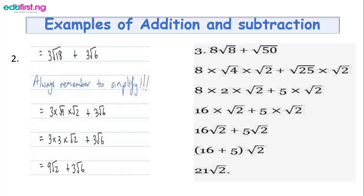The next example is 8 root 8 plus root 50. Root 8 breaks down as root 4 times root 2, and root 50 breaks down as root 25 times root 2. Root 4 is 2 and root 25 is 5. So 8 times 2 gives 16 root 2, and we have 5 root 2. Since root 2 and root 2 are now the same, we add: 16 plus 5 gives 21 root 2.